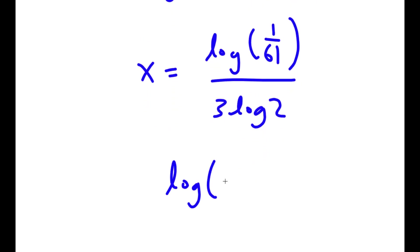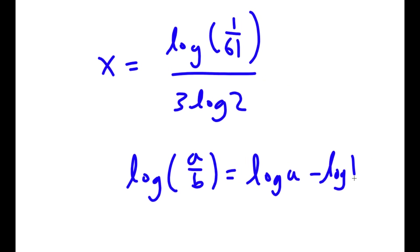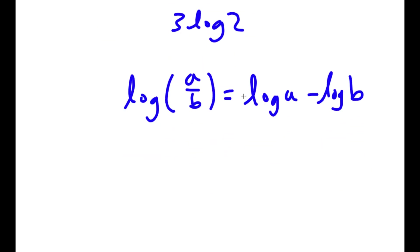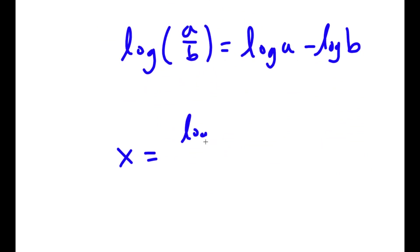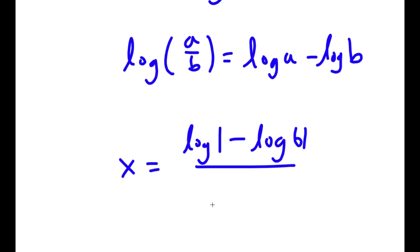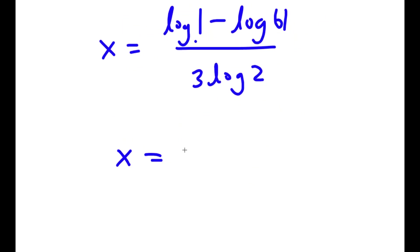Now if I have something in the form log a over b, this is equal to log a minus log b. So log of 1 over 61 equals log 1 minus log 61 over 3 times log 2. Now log 1 is simply equal to 0, so now I have x is equal to negative log 61 over 3 times log 2.